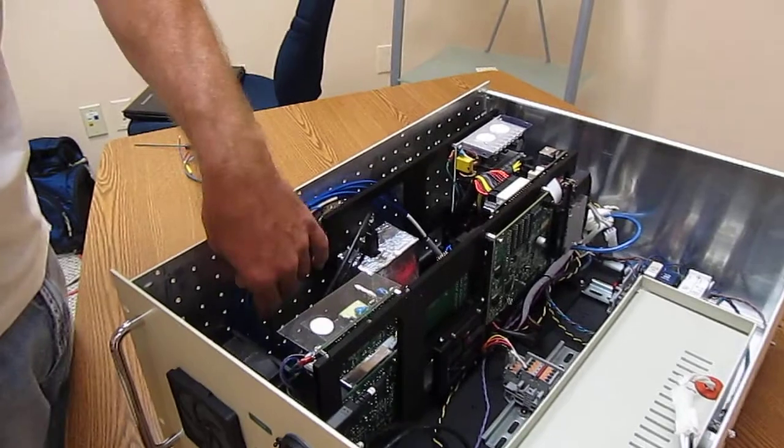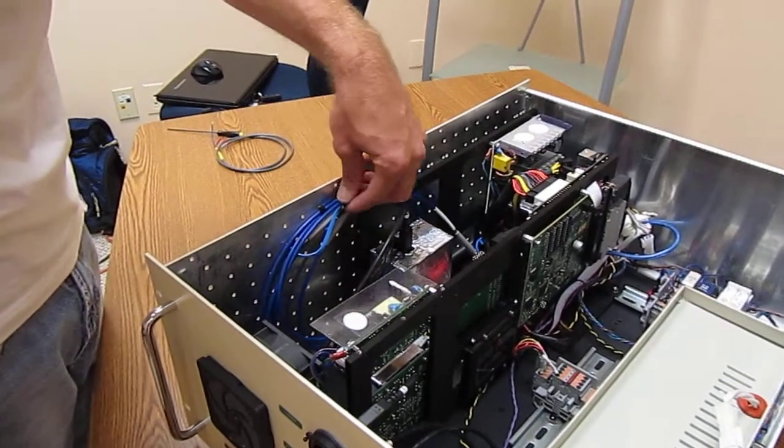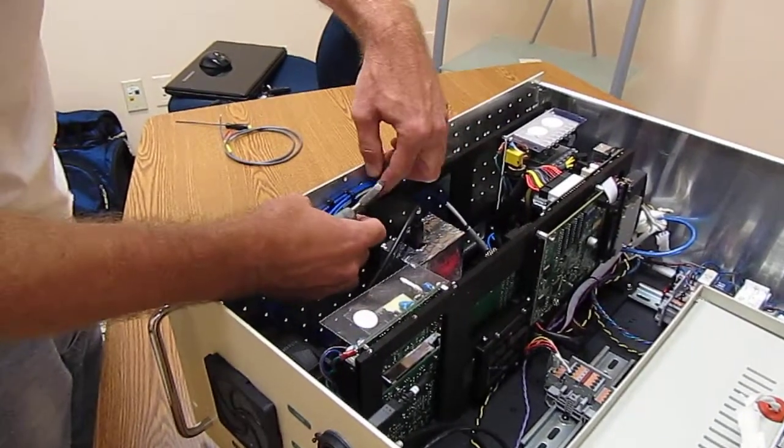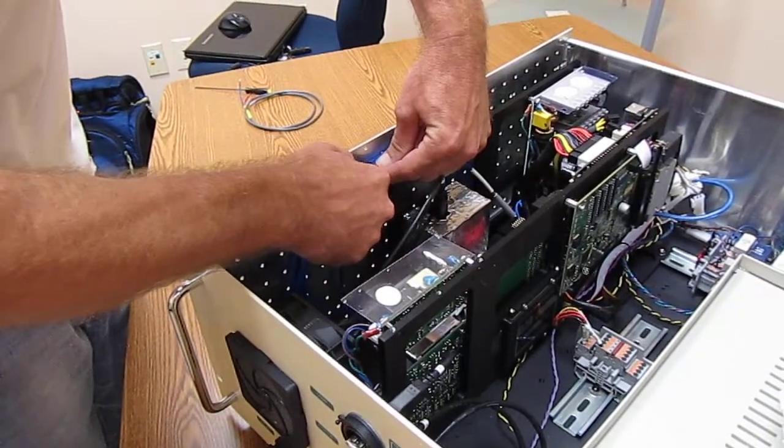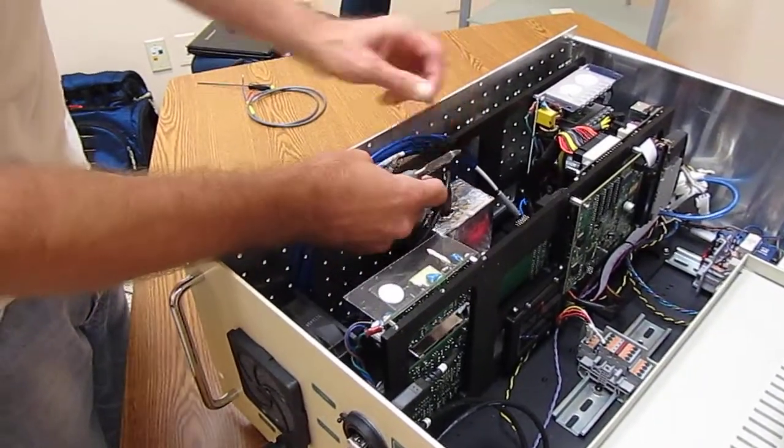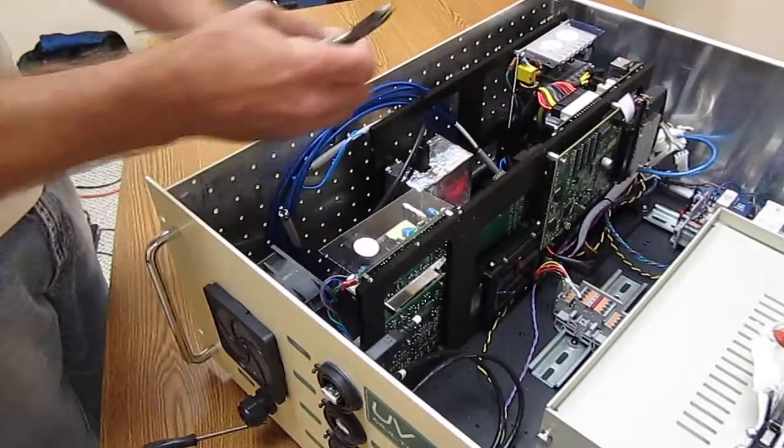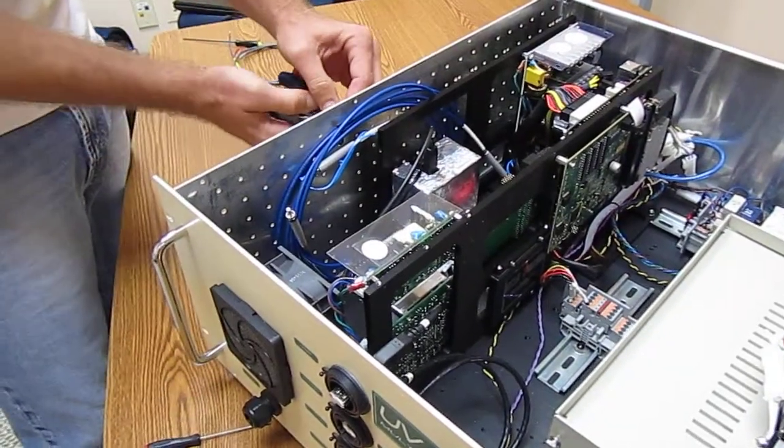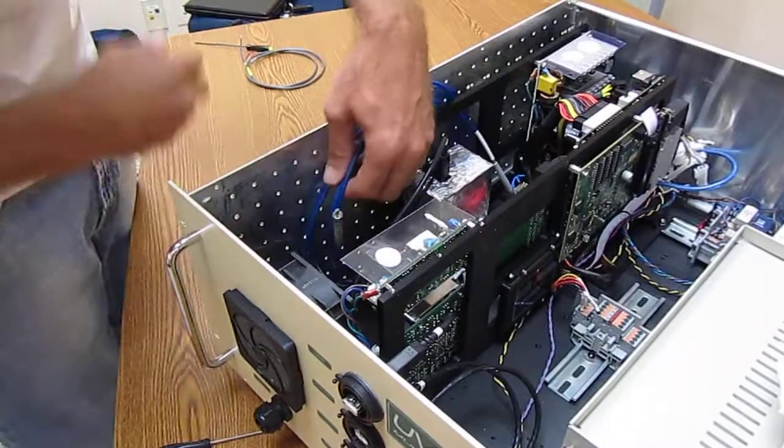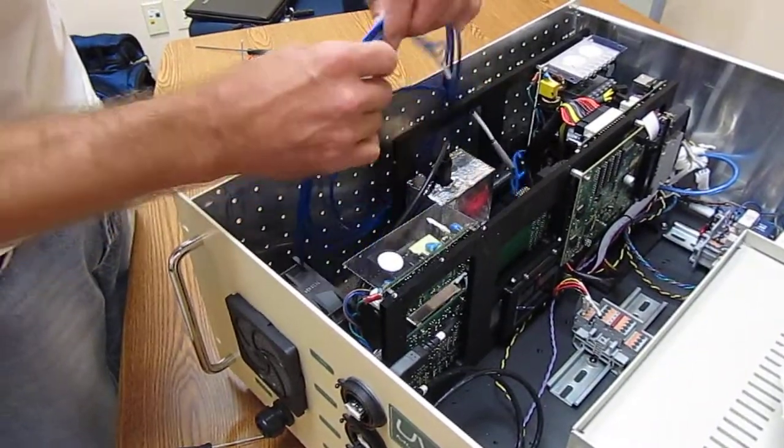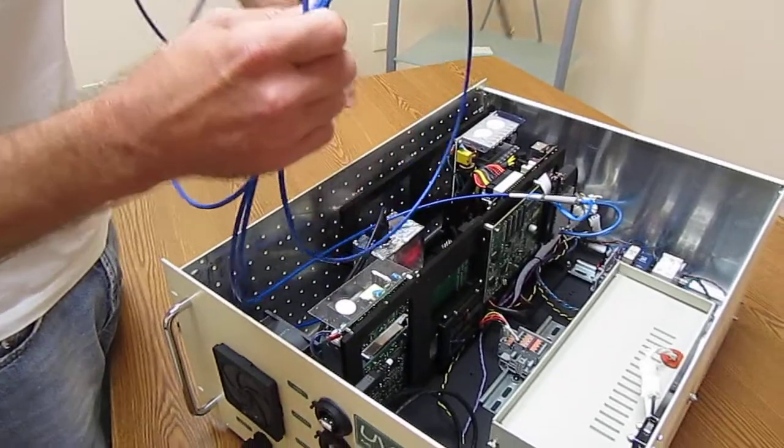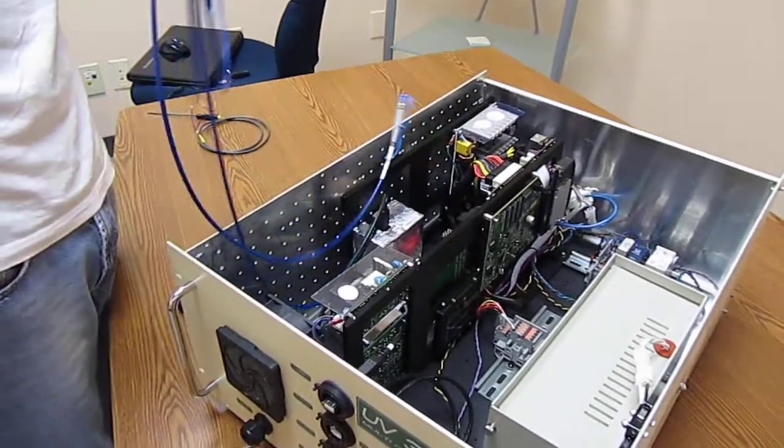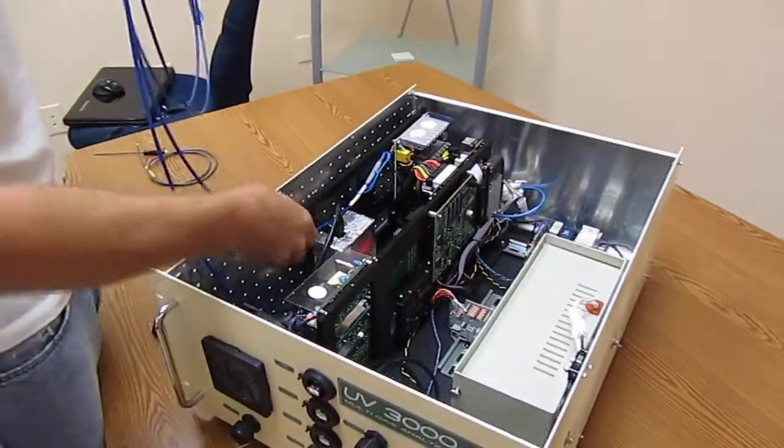Alright, this procedure will demonstrate setting up the UV-3000. Snip the zip ties that hold the fiber optic cables. Gently remove the cables and never bend them sharply.